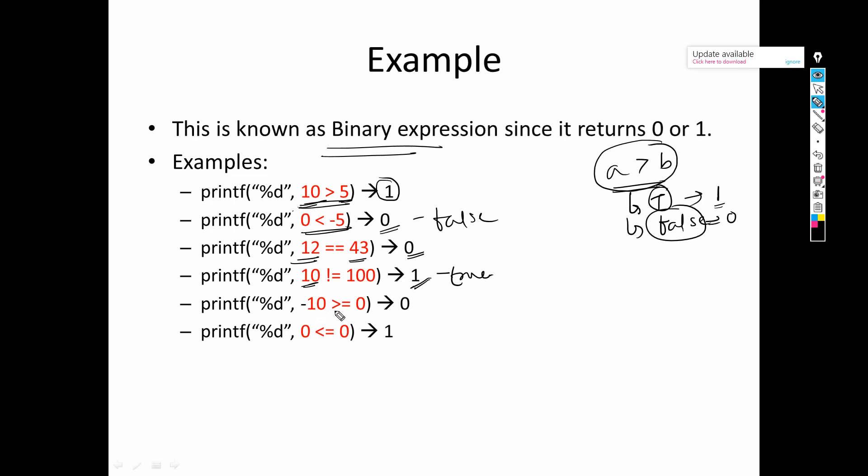-10 greater than equals to 0. So -10 is not either greater than or equals to 0, so it returns 0. 0 less than equals to 0. So 0 is not greater than but 0 is equals to 0, so it returns me 1.